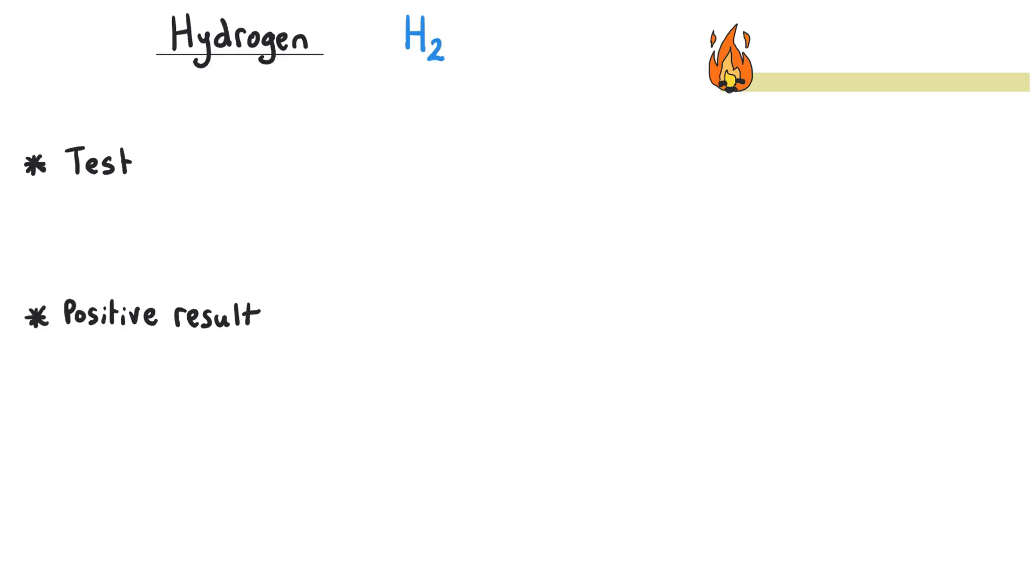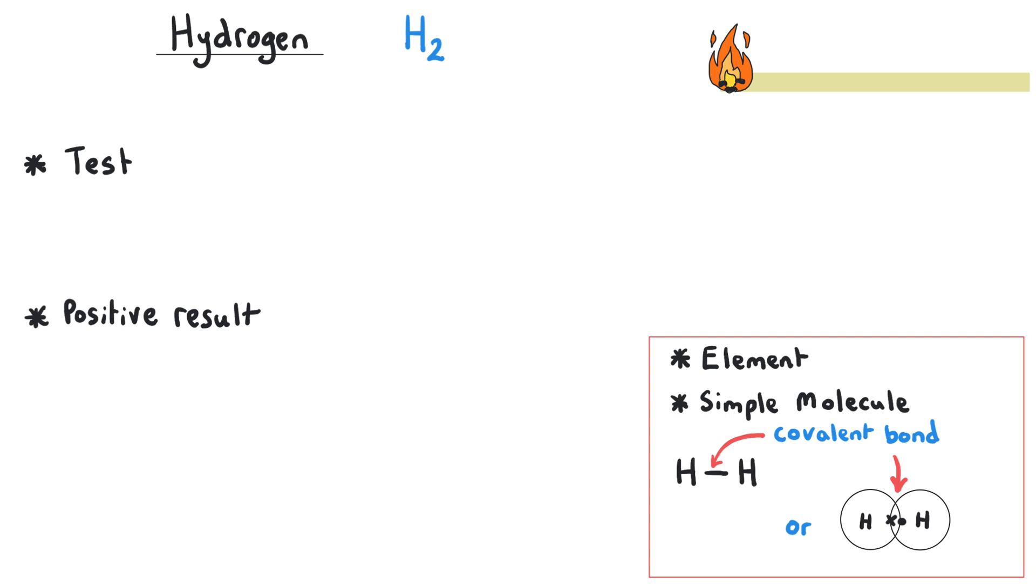Hydrogen gas has got the chemical formula H2. This tells us it's an element because it only contains one type of atom, and there are two atoms of hydrogen bonded together. This will be a covalent bond because hydrogen is a non-metal, and once those two atoms are bonded together they will make a molecule. Because it's a gas, we would write a little g after the formula to indicate the state symbol for this element.